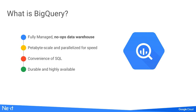A quick dive into how BigQuery works. It's a fully managed, no-ops data warehouse — petabyte scale, super parallelized for speed. You ask a question, it spins up tons of workers to analyze your data and charges you just for the seconds it's up, then gives you the response and spins them down. It has the convenience of SQL, so you don't need software developers to ask simple questions of your data. It's durable and highly available.